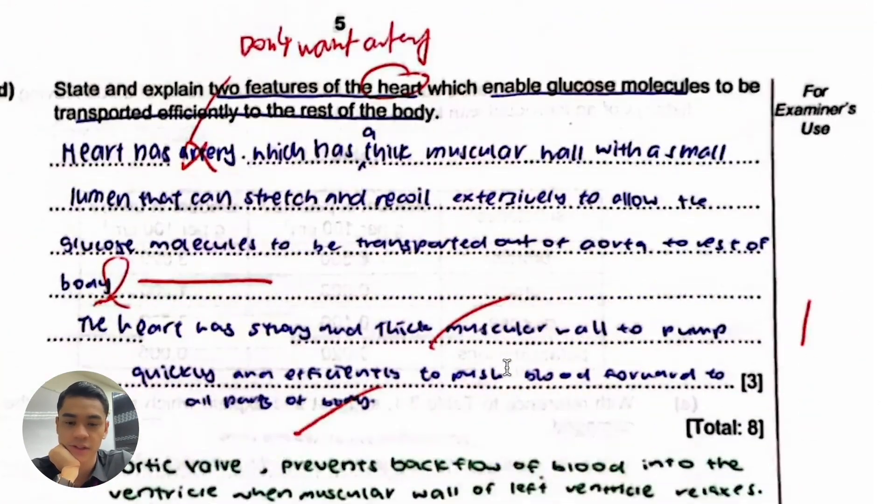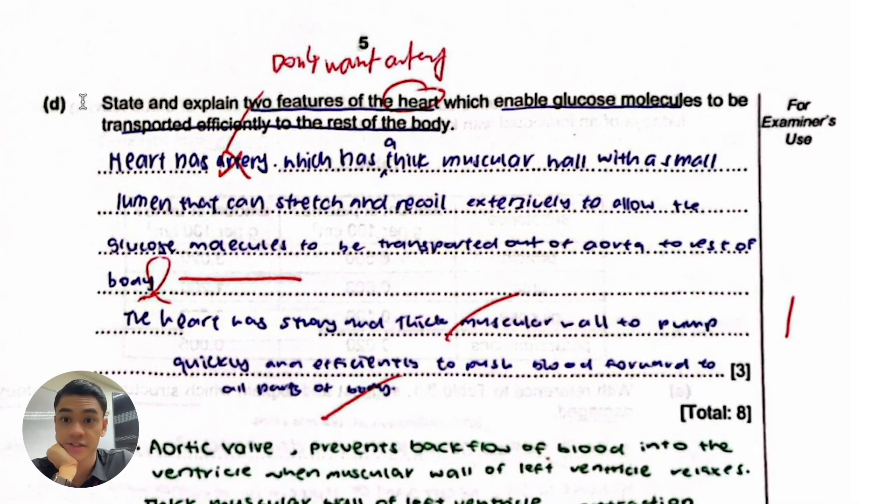They said state and explain two features of the heart. The heart like things like the wall is thick of the left ventricle or the valves that open and close that prevent backflow of blood, these are features of the heart. But I see when you talk about the artery which is connected to the heart, it's very dangerous because you're not answering specifically about the heart anymore.